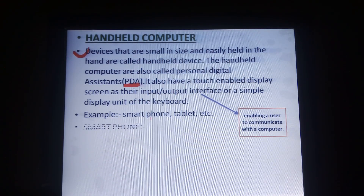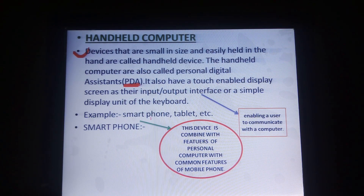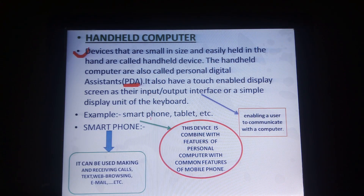What do you mean by the smartphone? A smartphone is a device that combines the features of a personal computer with the common features of mobile phones. It means it can be used for making and receiving calls, texting, web browsing, email, etc.